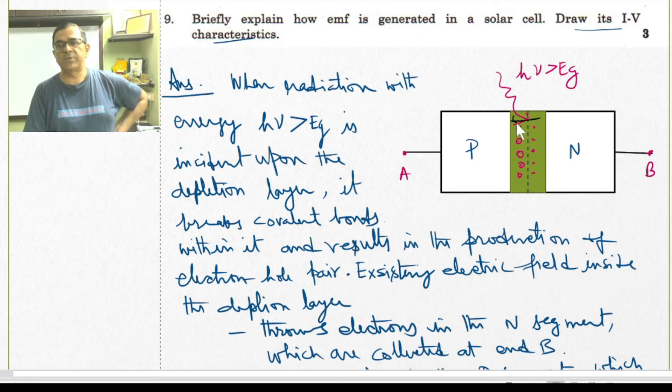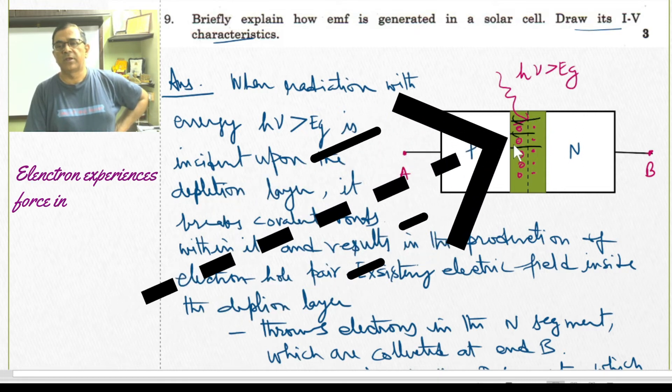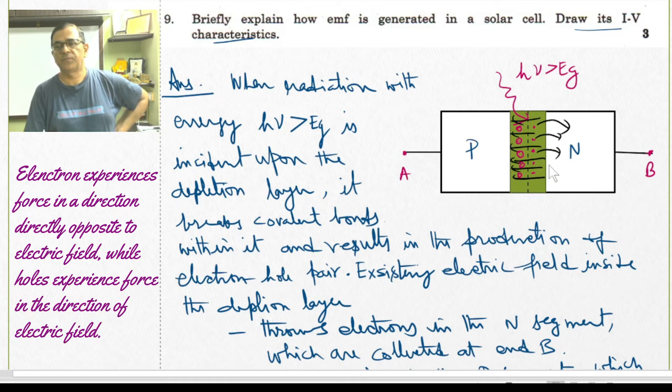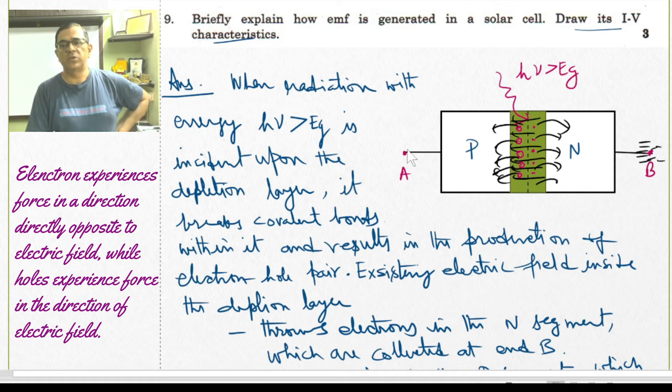Electric field already exists within the depletion layer. This electric field throws electrons within the N segment and holes into the P segment. Electrons are collected at end B while the holes are collected at end A. Because there is charge difference and hence EMF is induced.